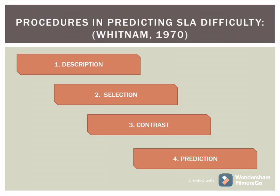According to Whitnam 1970, these are the procedures in predicting language difficulty: description, selection, contrast, and prediction. In description, we describe the two languages — most likely the native language and the second language. Next is selection, where we select items or structures which do not exist in L1 but exist in L2, and vice versa. Moving on, we have contrast, in which we contrast those items we have previously selected. The last step is prediction, in which we predict what will be difficult and what is not.